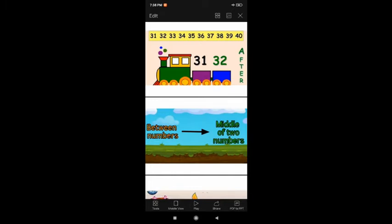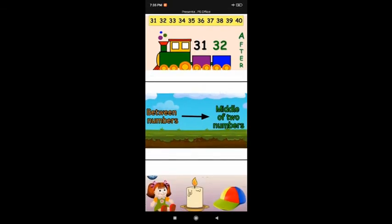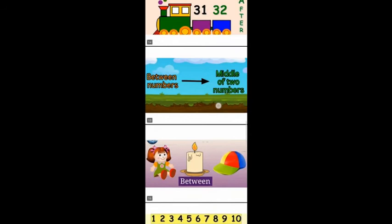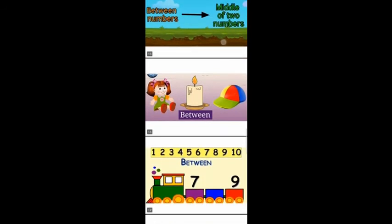So that is after numbers — the numbers that comes after means forward counting or counting numbers. Now let us do between. As I told you, what is between numbers? Between numbers is the middle of two numbers. What is middle? I am going to show you here. See, here are three pictures.